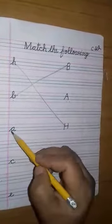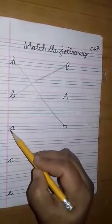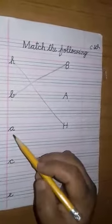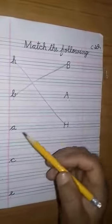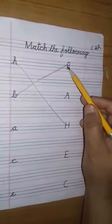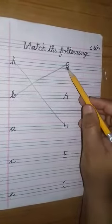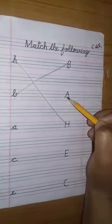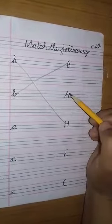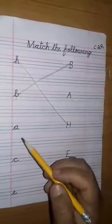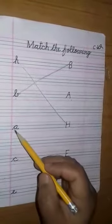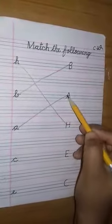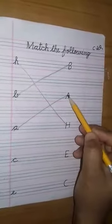Now this is cursive A. Go to this column. Is this capital B? And next is capital A. Children, you know what we will do? We will match them. Match cursive A with capital A. A says A.